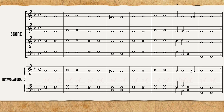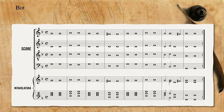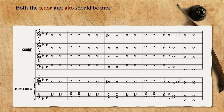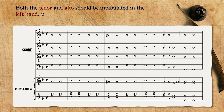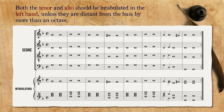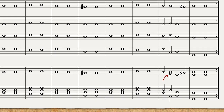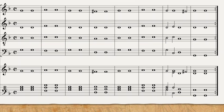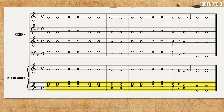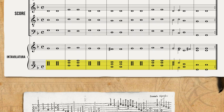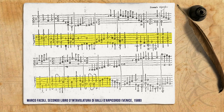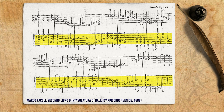After the tenor, Di Ruta adds the alto, noting that both the tenor and alto should be intabulated in the left hand, unless they are distant from the bass by more than an octave, in which case they should be put in the right hand. This clearly explains why the left hand needs more than five lines. Having the left hand carry the heavy load was the norm, and it is confirmed in many intavolatura sources.